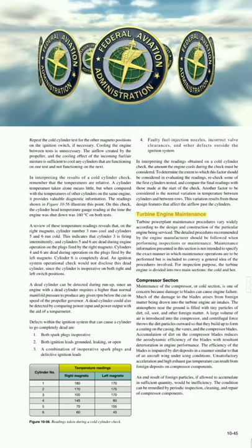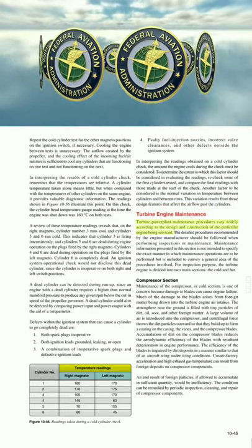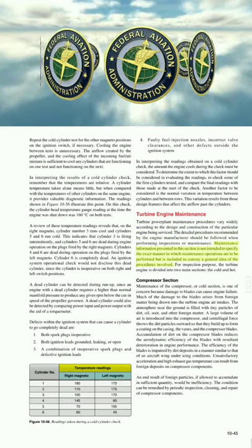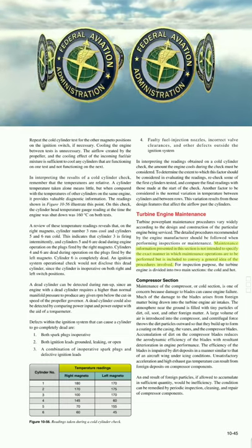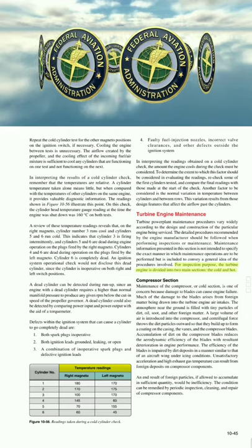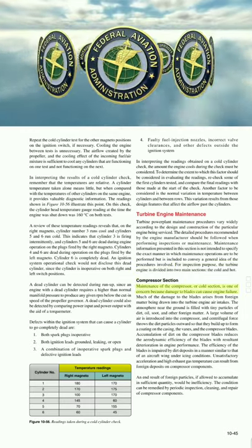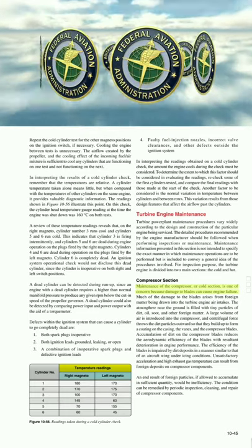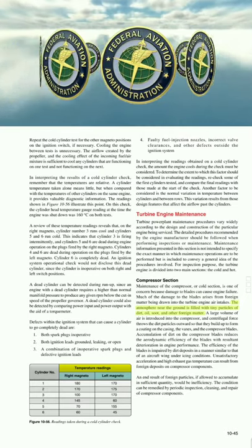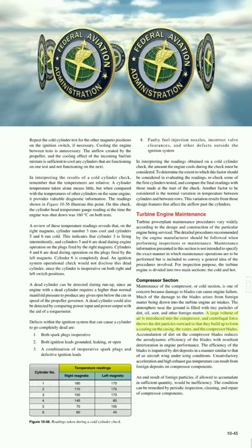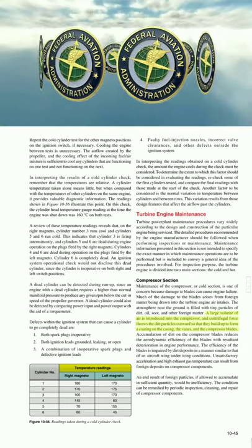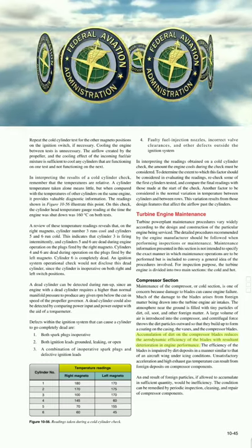Turbine power plant maintenance procedures vary widely according to the design and construction of the particular engine. The detailed procedures recommended by the engine manufacturer should be followed when performing inspections or maintenance. For inspection purposes, the turbine engine is divided into two main sections: the cold (compressor) section and the hot section. Maintenance of the compressor section is of concern because damage to blades can cause engine failure. Much of the damage to blades arises from foreign matter being drawn into the engine air intakes.